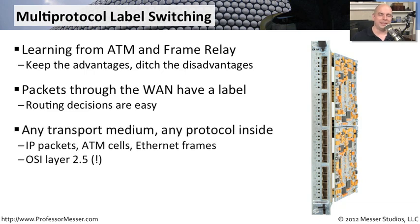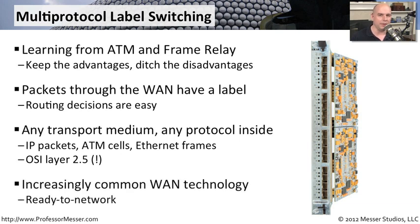You can put anything inside of an MPLS link — it can be any type of transport medium, such as Ethernet frames or TCP data. We simply attach some MPLS header information and send it into the MPLS cloud. MPLS really works at a middle layer of the OSI model, somewhere between OSI layer 2 and OSI layer 3. You'll sometimes hear MPLS referred to as OSI layer 2.5, because of its ability to straddle those two layers.